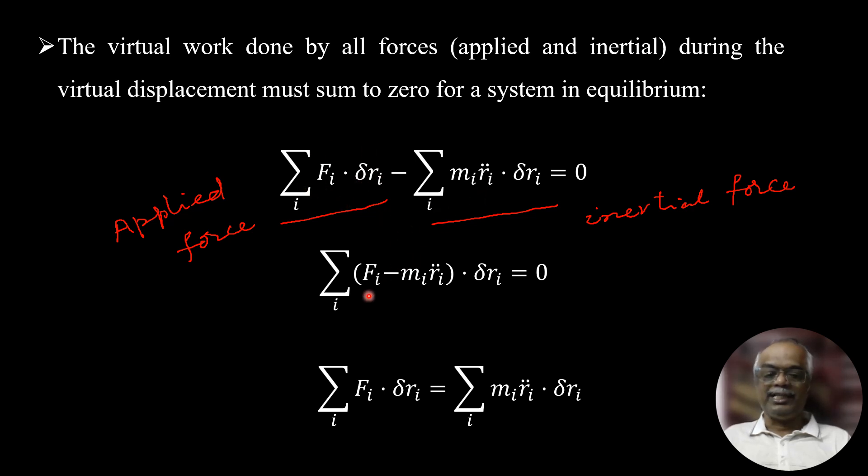Now you can rewrite this: summation over i (F_i - m_i r̈_i) · δr_i = 0. This is dot product.